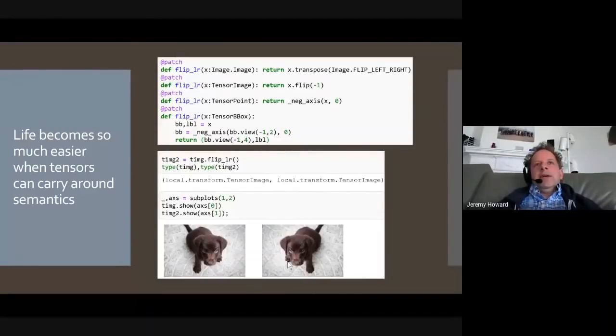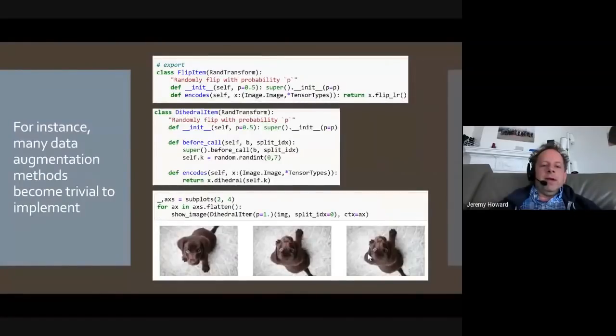It could even be a tuple containing a tensor and some bounding boxes and some bounding box classes, whatever it is, it will be able to display it. It will be able to convert it into batches for modeling, and so forth. So with that, we can now create, for example, a random transformation, called flip item. And we can say that the encoding of that random transformation is defined for a pillow image or any tensor type. And in each case, the implementation is simply to call x.flipLR. Or we could do the dihedral symmetry transforms in the same way. Before we call, grab a random number between zero and seven to decide which of the eight transposes to do. And then for encodes, call x.flipLR with that thing we just got. And so now we can call that transform a bunch of times and each time we'll get back a different random augmentation. So a lot of these things become nice and easy.